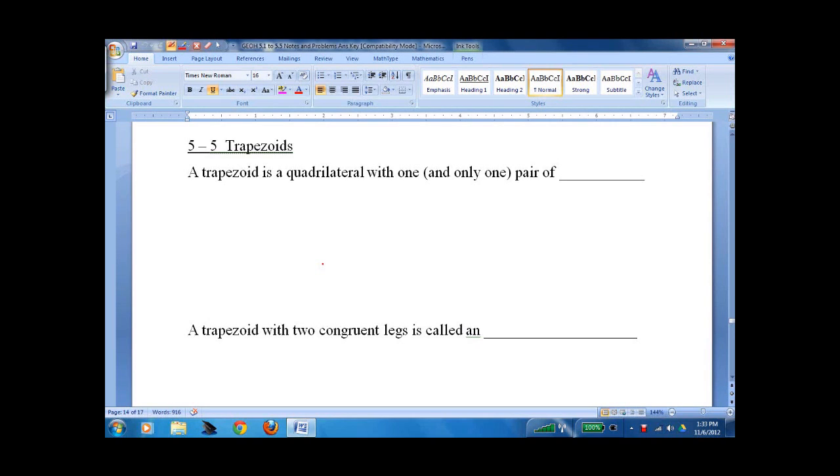Lesson 5-5, trapezoids. This is a very brief lesson. It's a quadrilateral, so we put it in here, but it's a specific type of quadrilateral. This is a type of trapezoid. A trapezoid is a quadrilateral with one and only one pair of parallel sides.